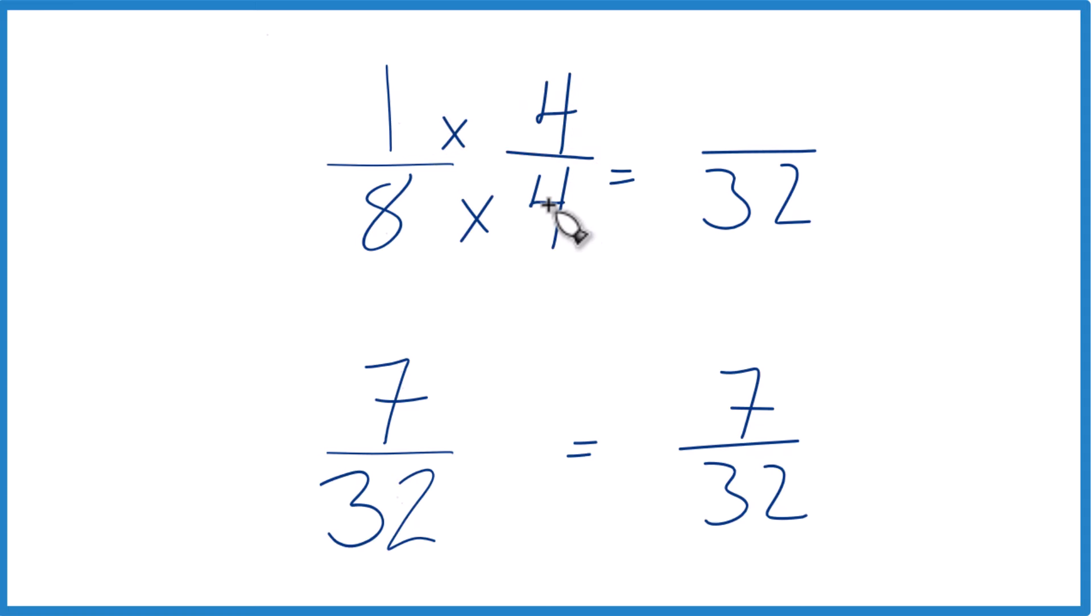4 over 4, that's 1, so we don't change the value, just the representation. 1 times 4 is 4. 4/32, that's an equivalent fraction to 1/8. They have the same value.